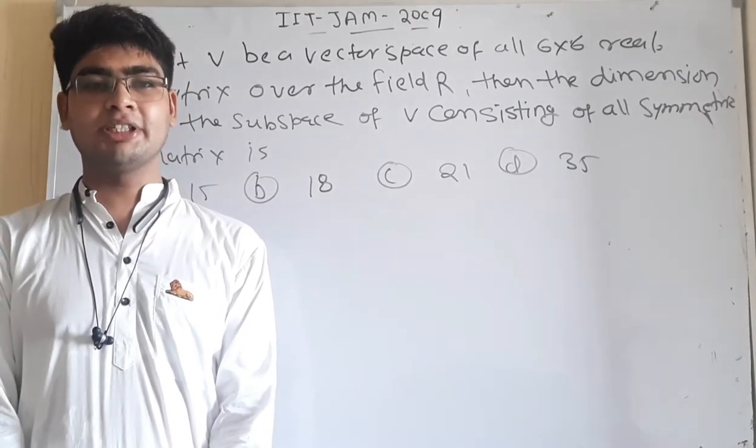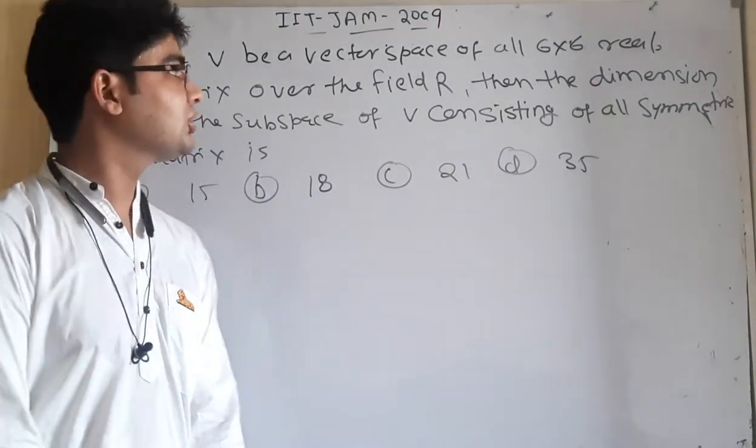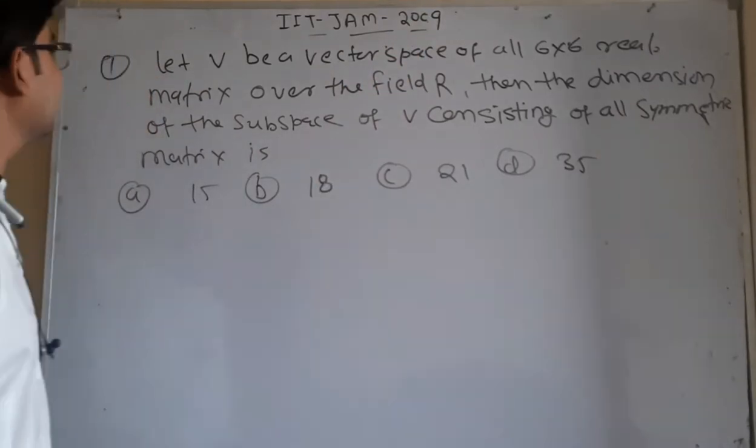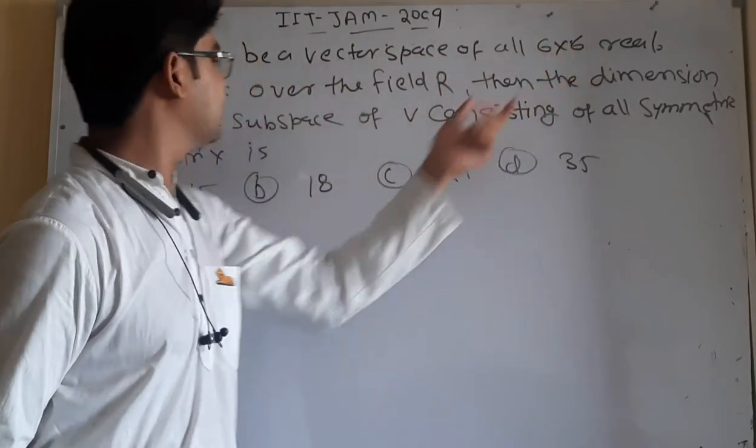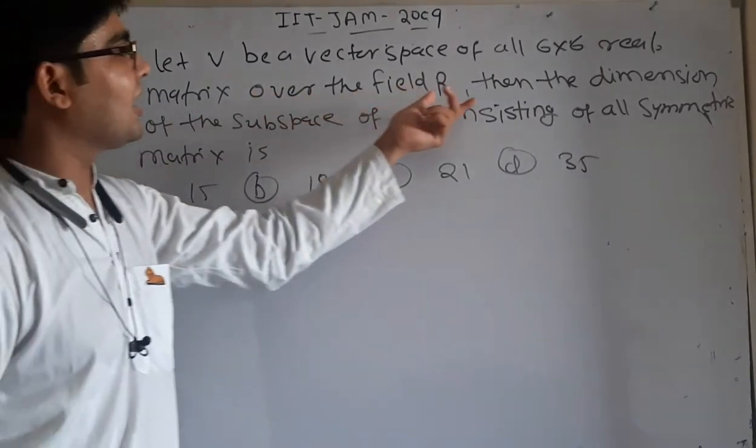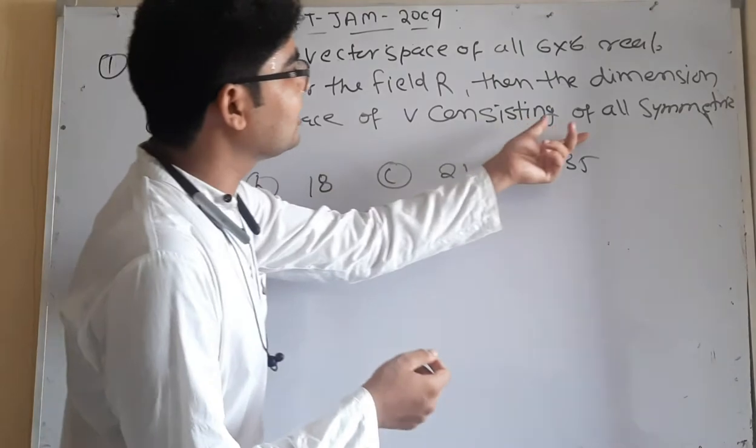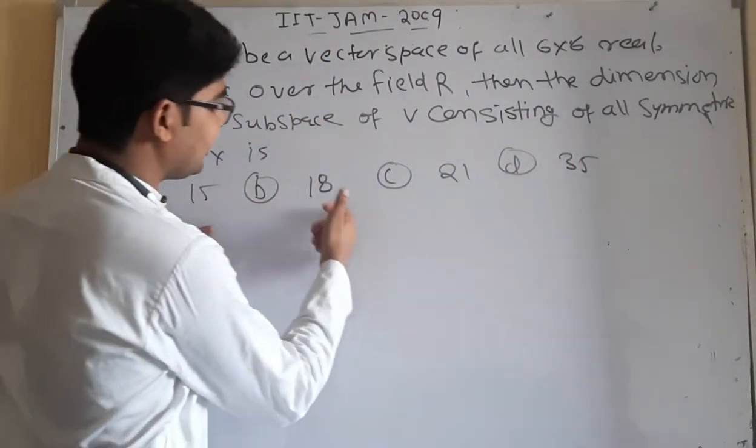Friends, if you are interested in mathematics in any university, you will see a question. The question is IIT JAM 2009. Let V be a vector space of all 6x6 real matrices over the field R. Then the dimension of the subspace of V consisting of all symmetric matrices is: 15, 18, 21, or 35.